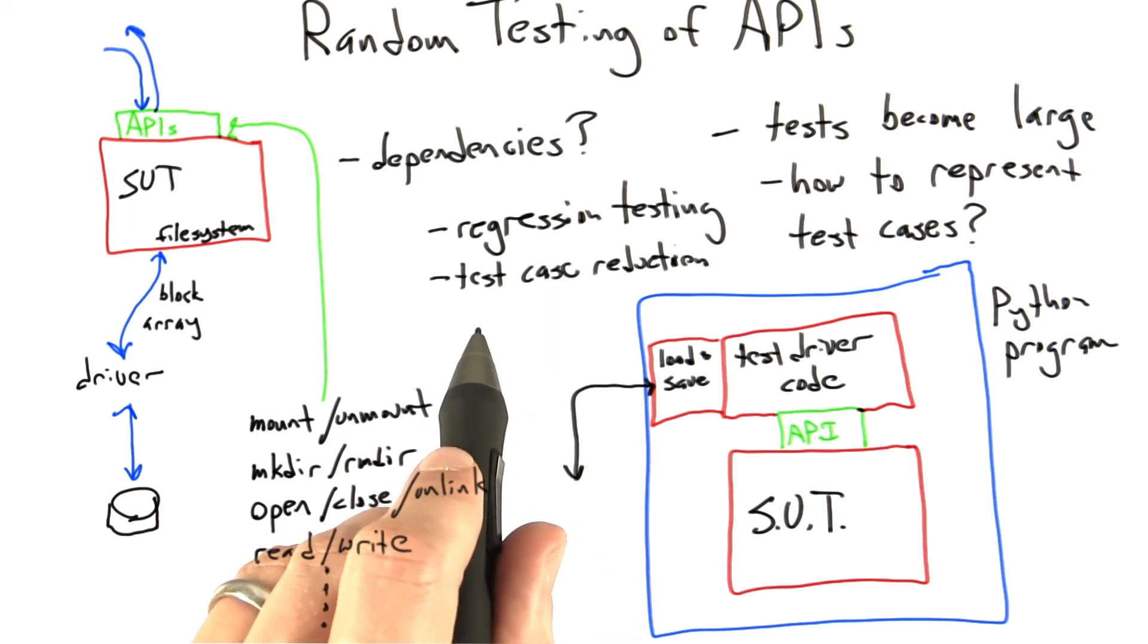Test case reduction is a piece of technology that's very often combined with random testing. And what it does is takes a large test case that makes the software under test fail and turns it into a smaller test case that still makes the software under test fail. And we'll look at test case reduction in more detail later on in this course.